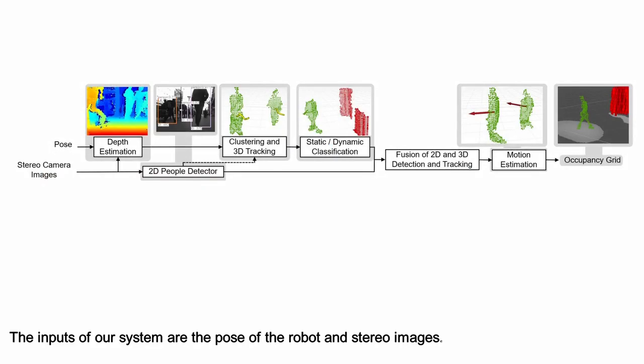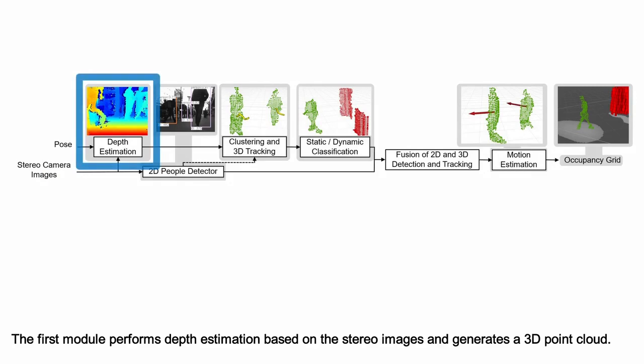The inputs of our system are the pose of the robot and stereo images. The first module performs depth estimation based on the stereo images and generates a 3D point cloud.